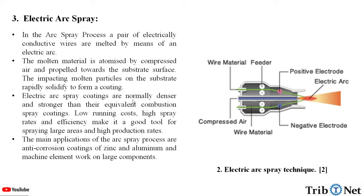The impacting molten particles on the substrate rapidly solidify to form a coating. Electric arc spray coatings are normally denser and stronger than their equivalent combustion spray coatings. Low running costs, high spray rates and efficiency make it a good tool for spraying large areas and high production rates. The main applications of the arc spray process are anti-corrosion coatings of zinc and aluminum and machine element work on large components. Here in the figure, we can see the electric arc spray technique.